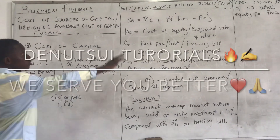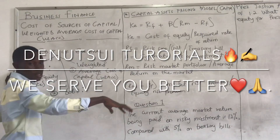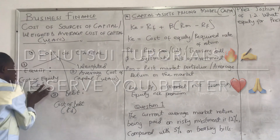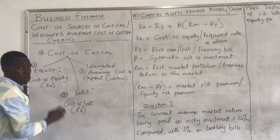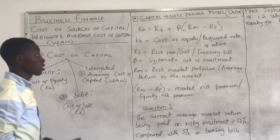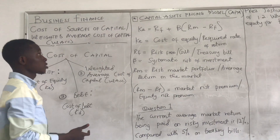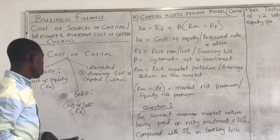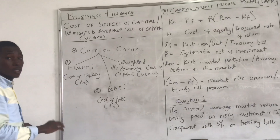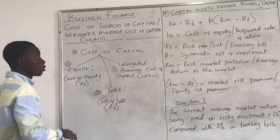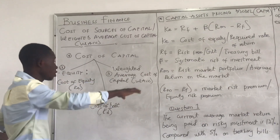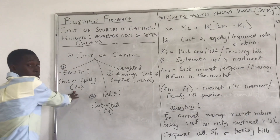We are continuing with the Capital Asset Pricing Model, where first we go with the cost of equity. We know the cost of equity — we have the constant dividend, the gold dividend amounts, and the Capital Asset Pricing Model. We now move on to the Capital Asset Pricing Model: the stock cost, the cost of equity.